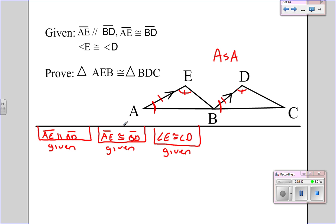And angle E is congruent to angle D. So how many congruent statements do I have? I have one, two. So I need one more to get my ASA, and that comes from the parallel lines.